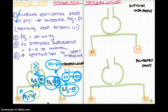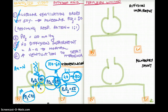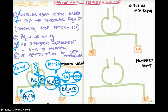Another important point: if there is no diffusion impairment, even in a hypoventilation state, the A-a gradient is going to be normal, because there is no problem with diffusion. There is hypoventilation — less air is coming to the lungs — but there is no problem with exchange. So don't be confused: in hypoventilation, the A-a gradient is not increased. It is going to be normal.